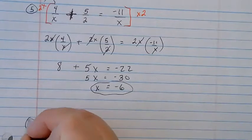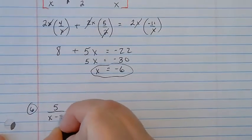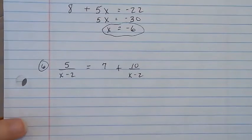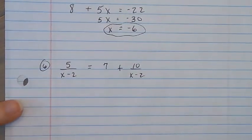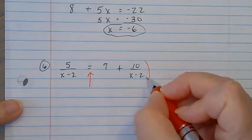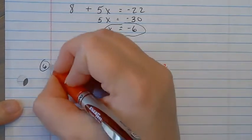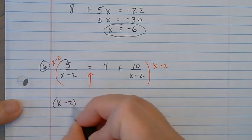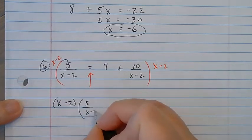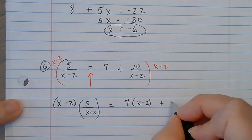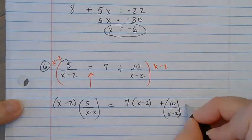Here's the next one. Again, it looks complicated, but what I'm going to do to make it easier is multiply both sides of the equal sign by something that would get rid of the fraction on both sides. So I'm going to take both sides times x minus 2. When I multiply, I have x minus 2 times 5 over x minus 2, equals 7 times x minus 2, plus 10 over x minus 2 times x minus 2.